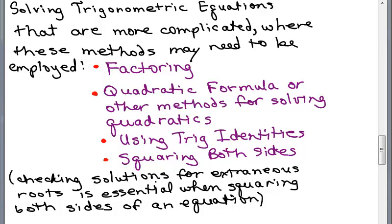This is part of a series of videos where we're going to be solving more complicated trigonometric equations where we might need to use these methods: factoring, the quadratic formula, or other methods for solving quadratics. We might have to use trig identities, square both sides, or deal with multiple angles. Keep in mind that any time you square both sides of an equation, it's essential that you check solutions for extraneous roots.